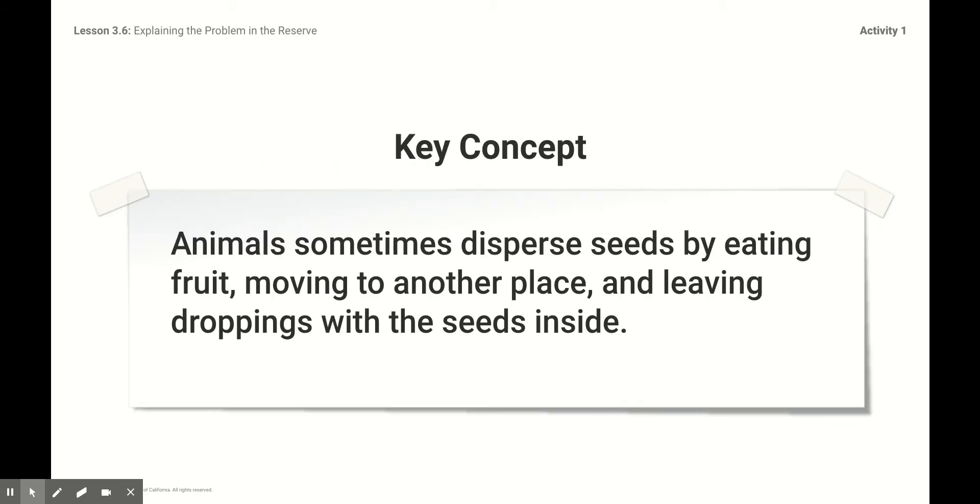The big idea that we need to take away from last lesson was that animals sometimes disperse, that means give out, the seeds by eating the fruit. So the bear eats the fruit from the bushes and then he goes to another place and he leaves his droppings with the seeds inside. They go into the ground and that's how a new bush grows in that place in the habitat. Birds do it and bees do it, and that's how the seeds get dispersed throughout that habitat.